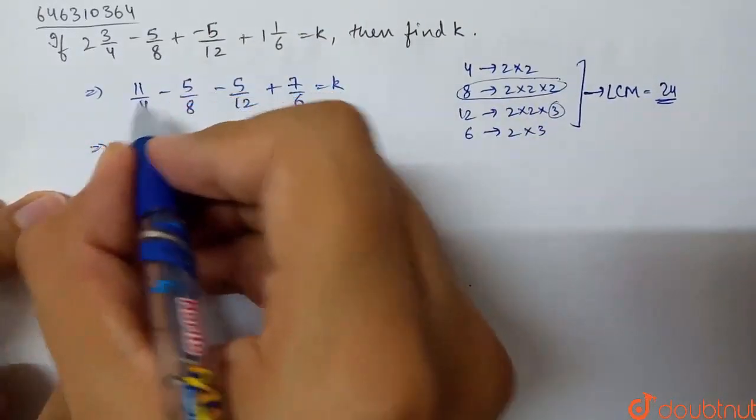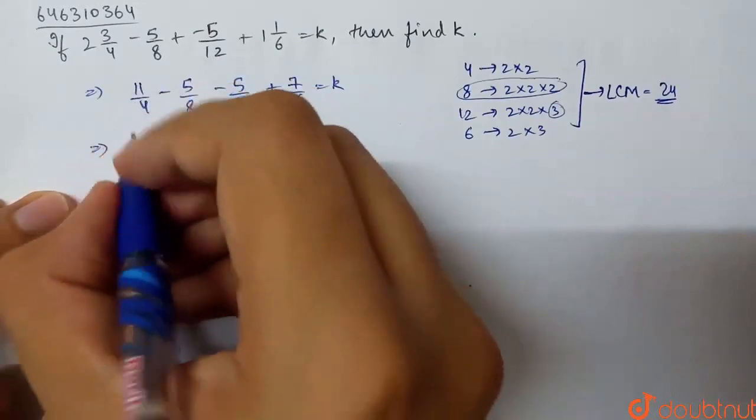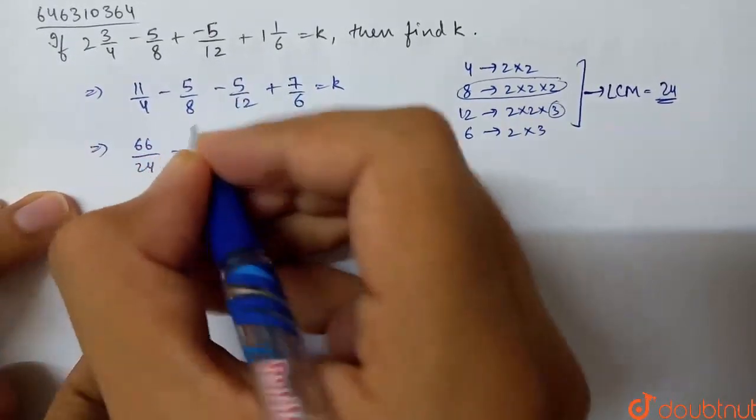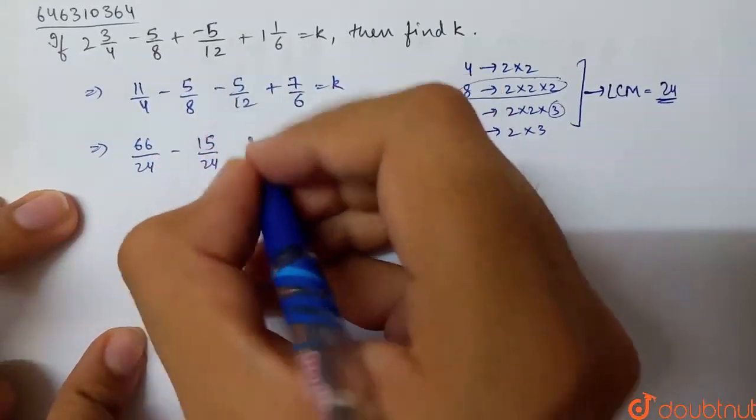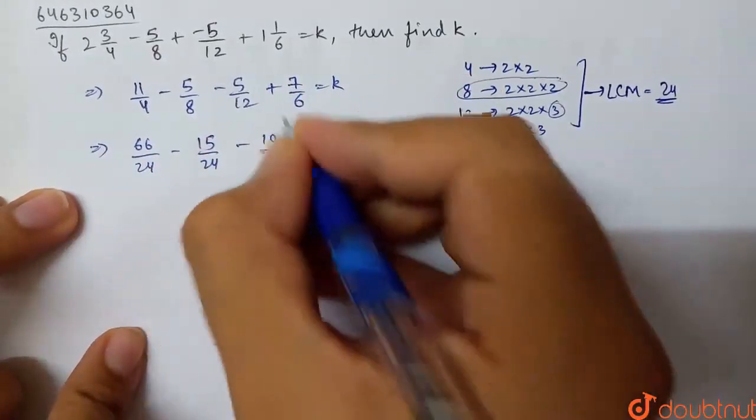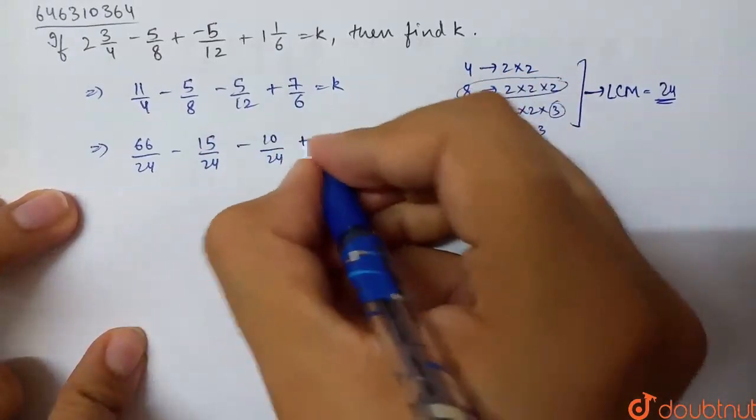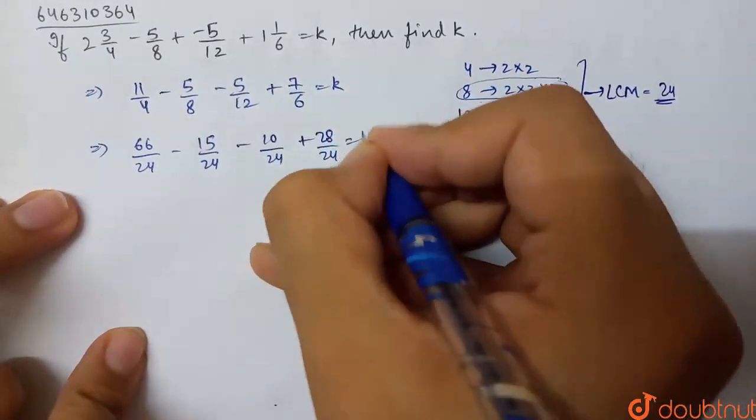Now convert each fraction to denominator 24. 11/4 times 6 gives 66/24, minus 5/8 times 3 gives 15/24, minus 5/12 times 2 gives 10/24, plus 7/6 times 4 gives 28/24, equals k.